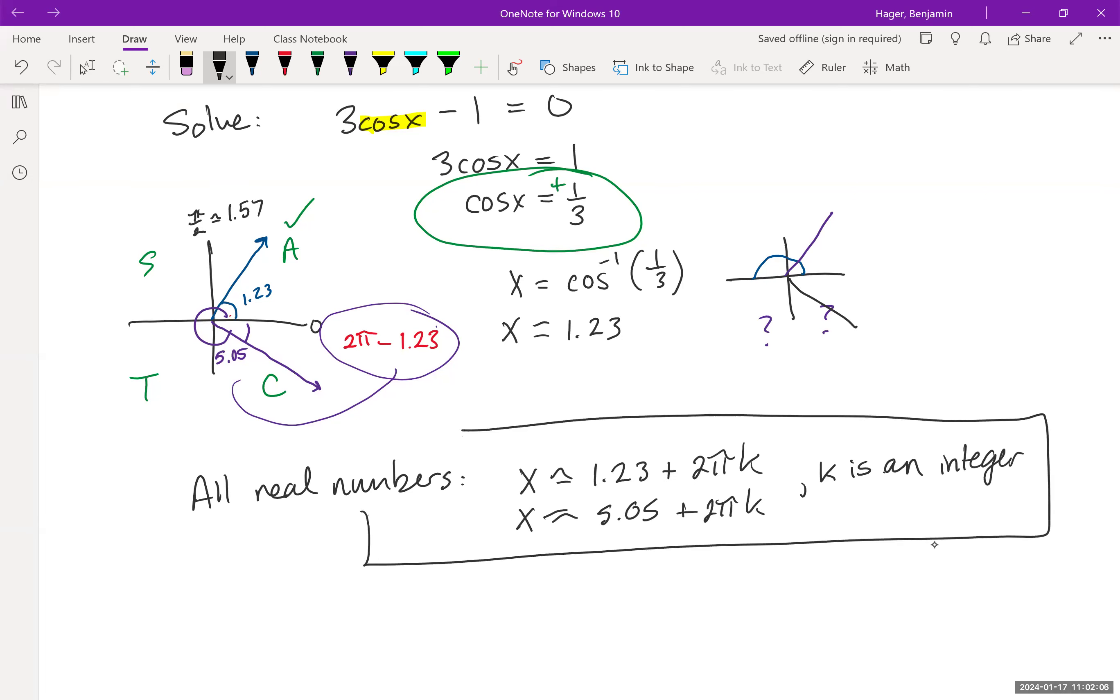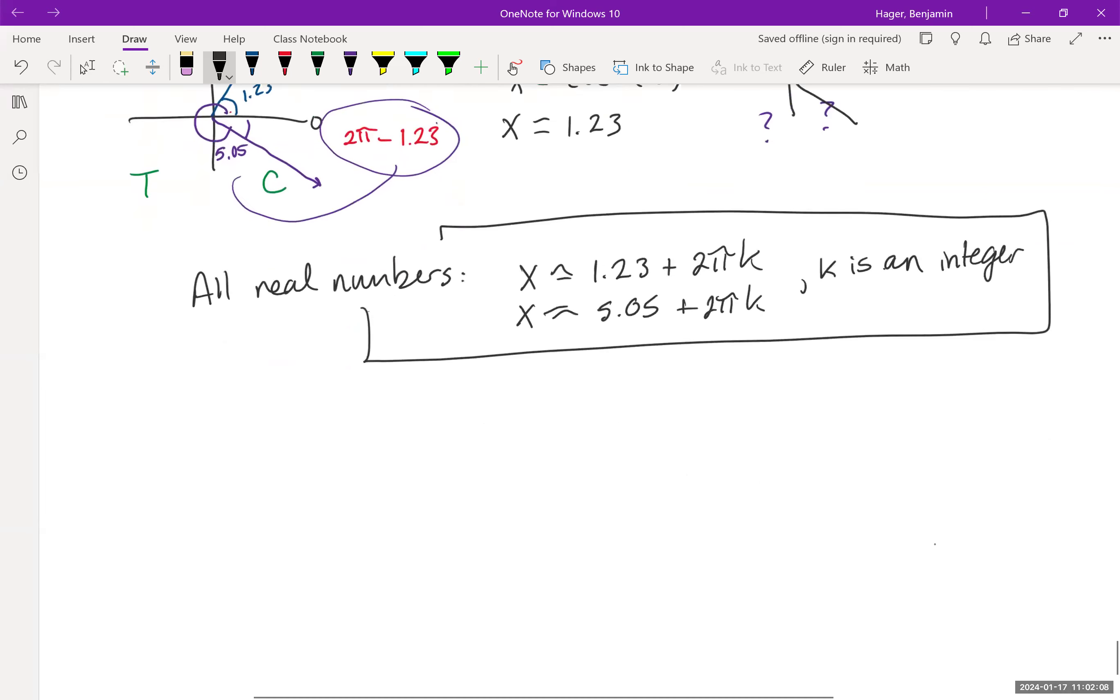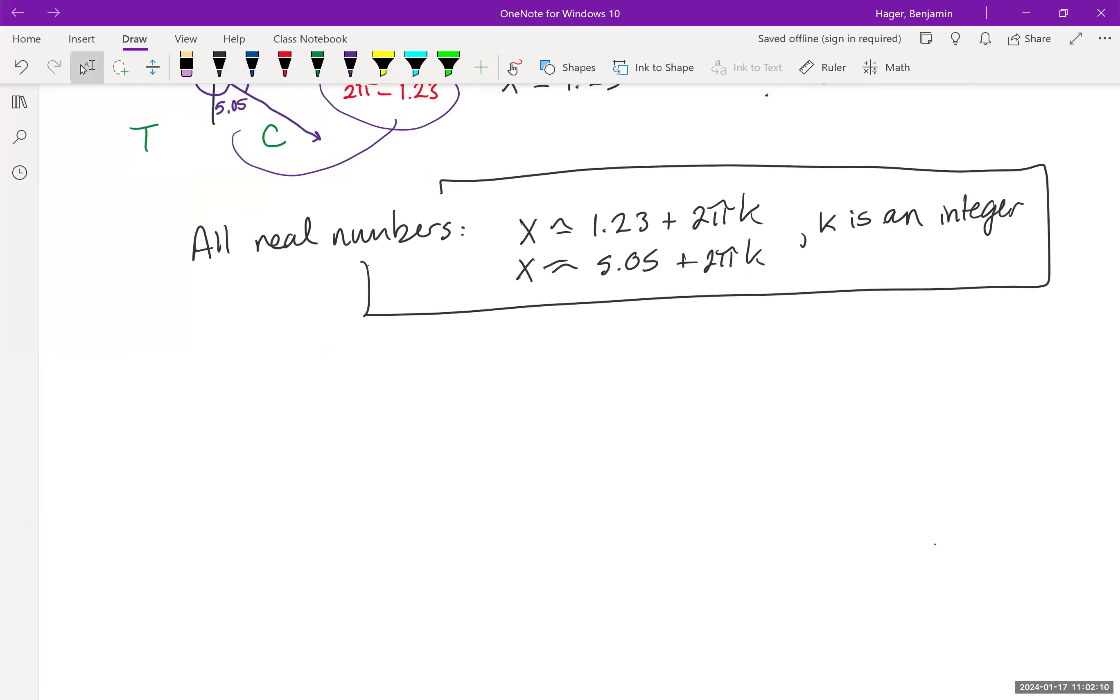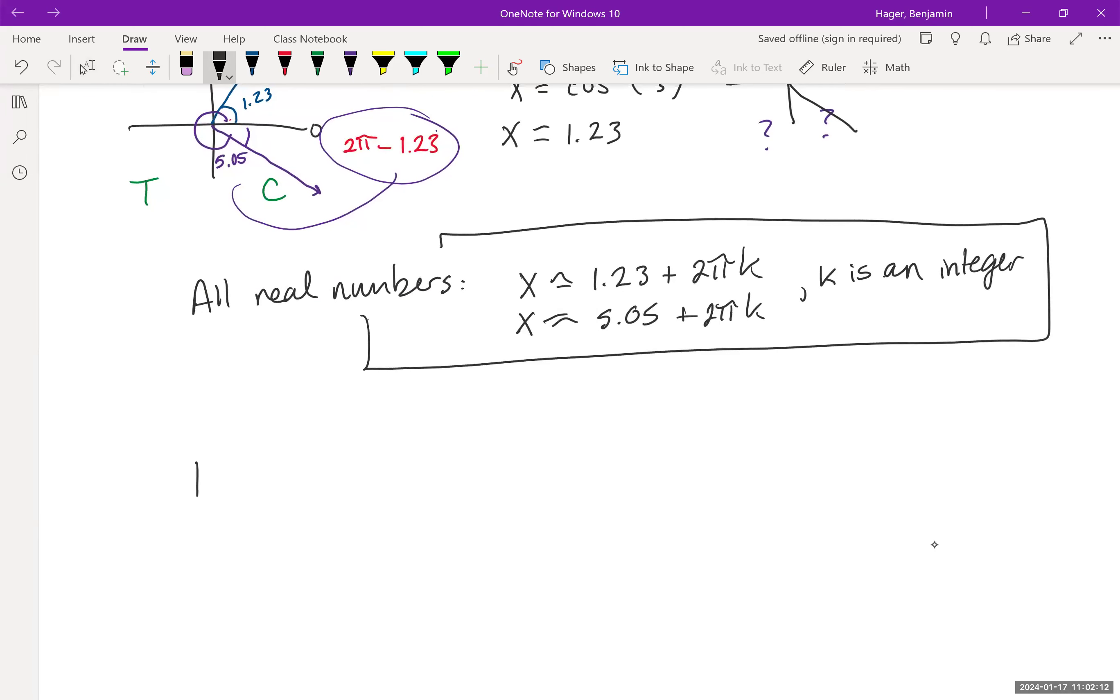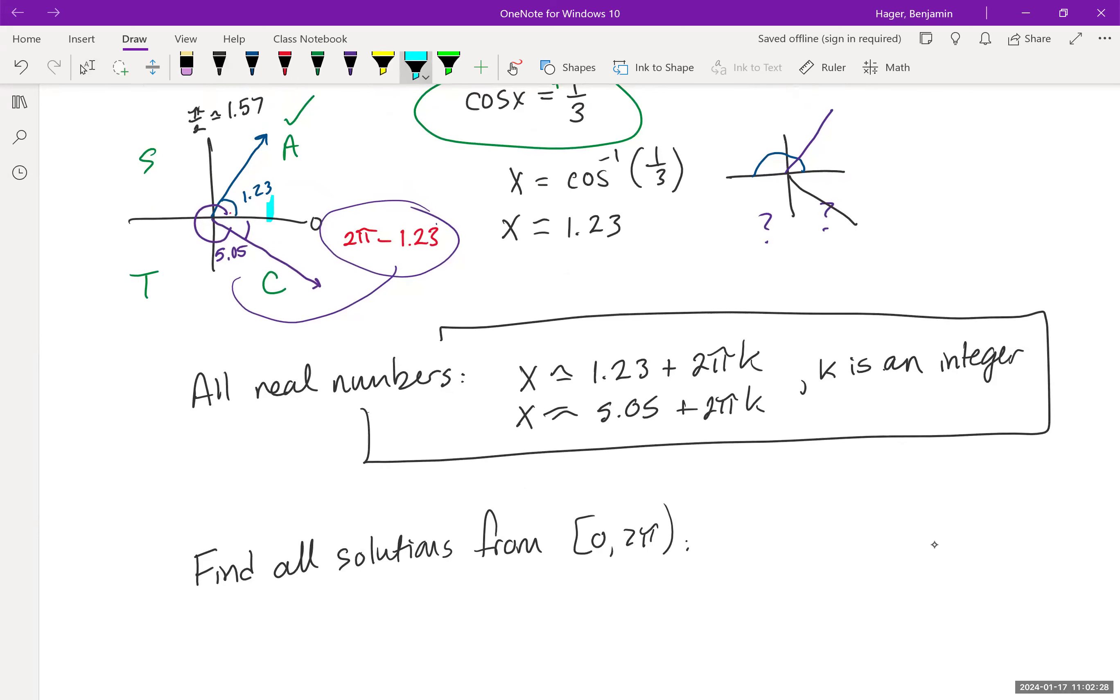If they wanted the solutions between 0 and 2π, that's just saying take one lap around the circle and report back all the solutions you find. So in this case, it would be 1.23 and 5.05.